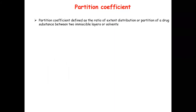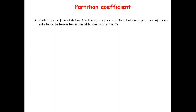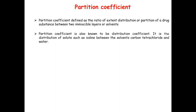The partition coefficient is defined as the ratio of the extent of distribution or partition of a drug between two immiscible layers or solvents. In these two immiscible layers, one will be the aqueous solvent and the second will be the organic solvent. The partition coefficient is also known as the distribution coefficient because the drug distributes into two different solvents which are immiscible with each other.